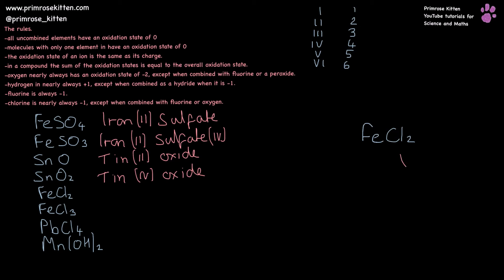Iron chloride. Chlorine is minus one. There are two chlorines, which means chlorine is overall making minus two, meaning iron must be contributing plus two, making FeCl2 iron(II) chloride.